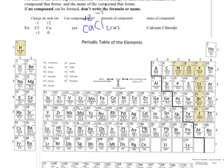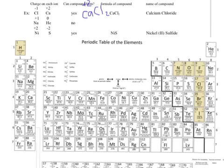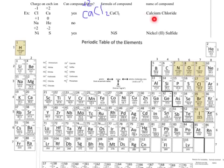For our next example, we have sodium, which is a plus 1, and helium, which is a noble gas. Since it's a noble gas, notice there's no ionic charge listed — noble gases don't form ions. So no, I cannot form a compound, therefore I cannot write a formula and I cannot give it a name.